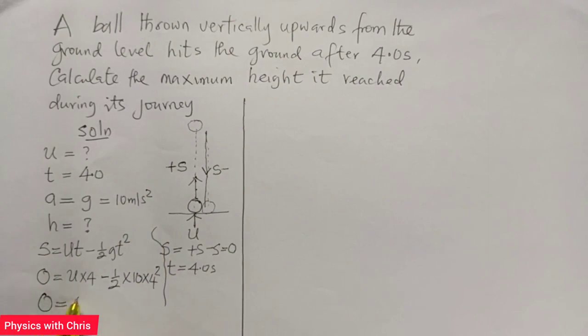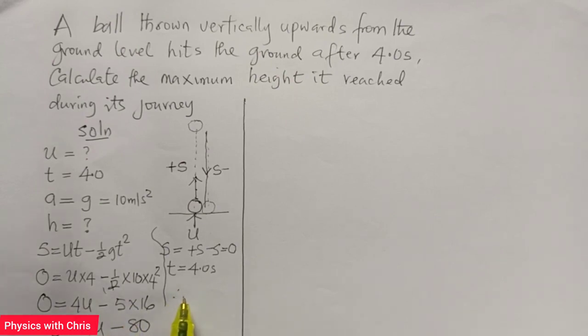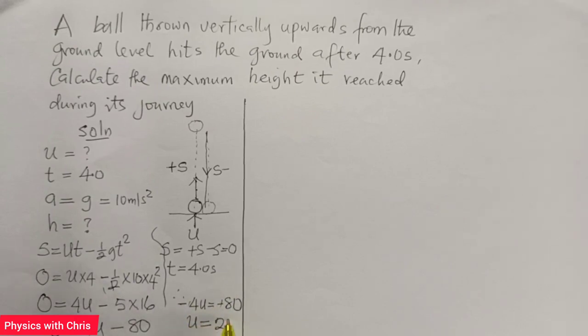Zero equals 4U minus 5 times 16, which is 80. That gives us zero equals 4U minus 80. Therefore, if I bring 80 to this side, 4U equals 80. Initial velocity U equals 20 meters per second.